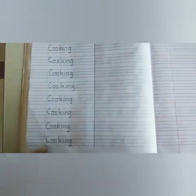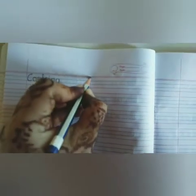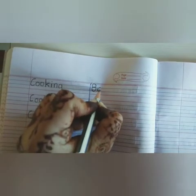Now we'll write the next spelling after the blue line — the spelling of 'bathing'. Capital B, small a, small t, small h, small i, small n, small g — B-A-T-H-I-N-G — bathing.